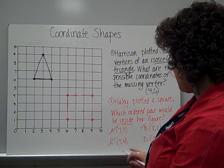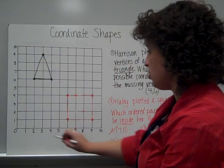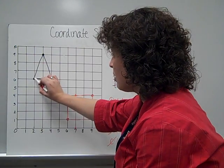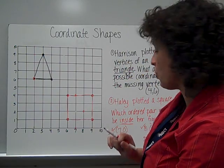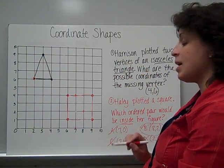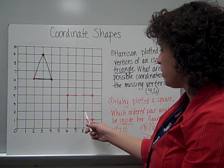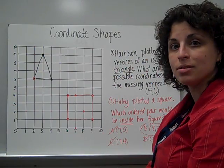So no to C. And the last one to check is two, six, which would be right here. And that's a definite no, nowhere near my square. So my answer is B. Eight, two would be inside Haley's square.